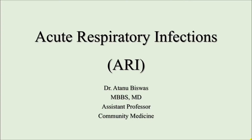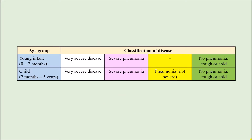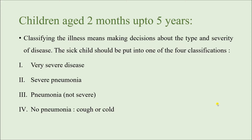Let us continue with the second part of acute respiratory infections. If you remember, we finished our last video with a slide where we classified ARI according to age group. Today we are going to classify ARI and learn its management in children aged two months to five years. According to IMNCI guidelines, we are trying to make a decision about the type and severity of illness rather than making a diagnosis. The child can be put in one of four classifications: very severe disease, severe pneumonia, pneumonia that is not severe, and no pneumonia — cough or cold.